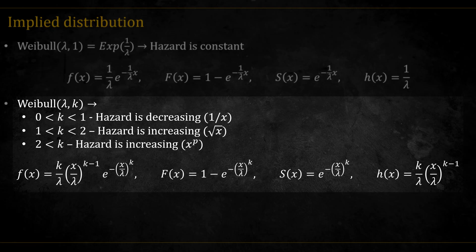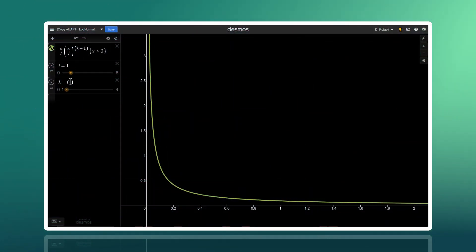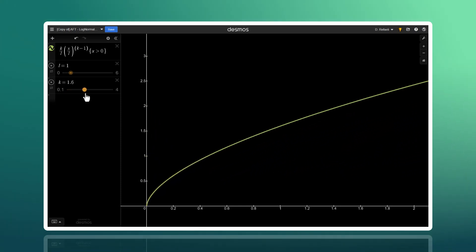And for k greater than 2, the hazard is increasing polynomially. We can see this on this graph. Here for k less than 1. Here for 1. Here for k between 1 and 2. And here for k greater than 2.